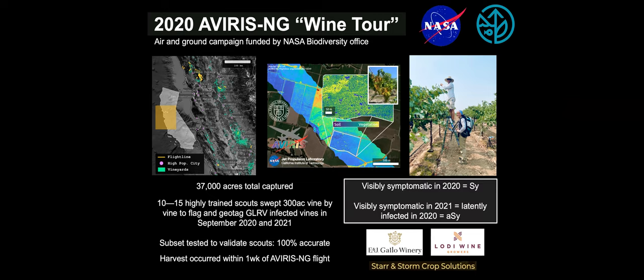This is a unique and exciting data set because collections were taken in both 2020 and 2021, enabling two classes. Any grapevines visibly symptomatic in 2020 were labeled symptomatic. Vines that were non-symptomatic in 2020 but became visibly symptomatic in 2021 were assumed to have been latently infected in 2020 at the time of the flight, and therefore labeled asymptomatic. This is consistent with what is known about grapevine biology, though it is important to acknowledge this is an assumption, as it was not possible to molecularly test every grapevine across the 300 acres.